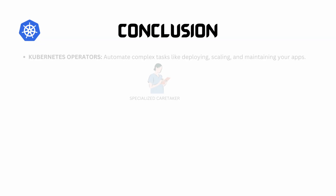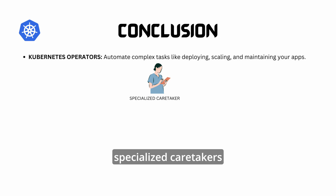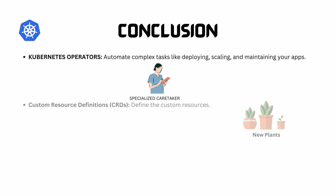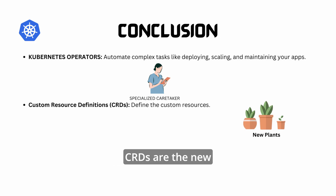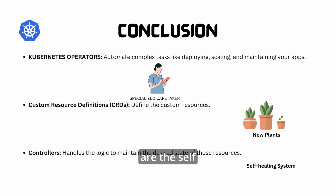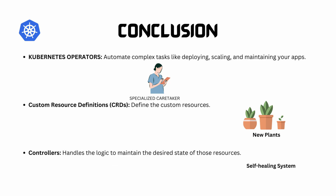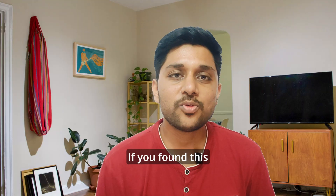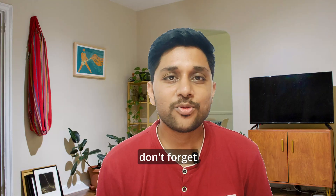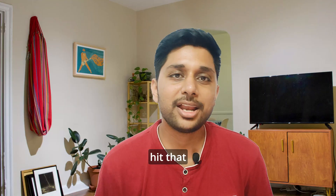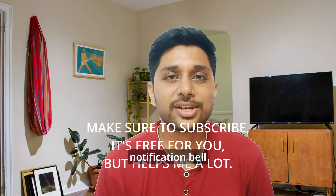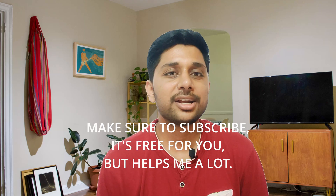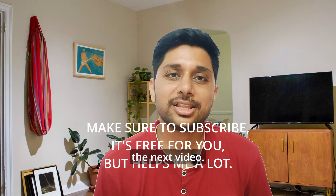So there you have it. Kubernetes operators are like specialized caretakers in a greenhouse. CRDs are the new types of plants that you can introduce, and controllers are the self-healing system that keeps everything in check. If you found this video helpful, don't forget to like, subscribe, and hit that notification bell for awesome content. See you guys in the next video.